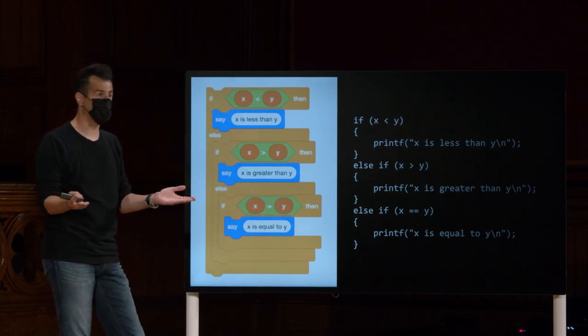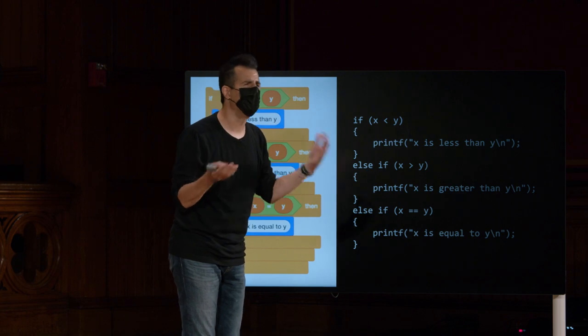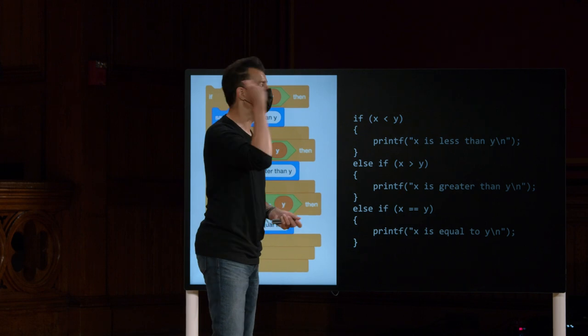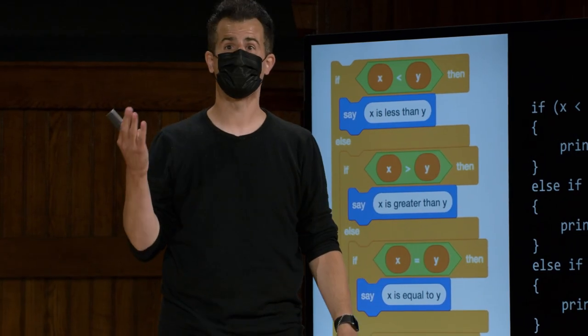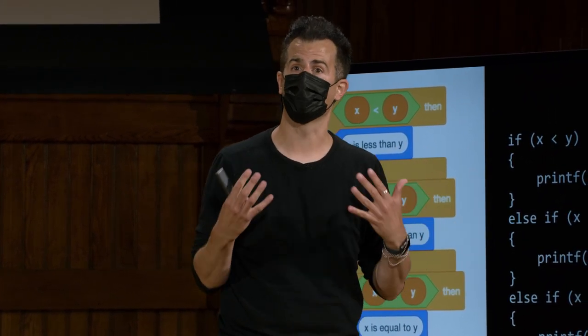Mas não precisamos do último if. Porque, pelo menos no mundo da comparação de inteiros, será menor, maior ou igual. Não há outro caso. Assim, se você pode economizar alguns segundos, se quiser, de seu programa em execução, um piscar de olhos, fazendo apenas duas perguntas e em seguida inferindo qual dele deve ser a resposta para a terceira apenas por natureza de sua própria lógica humana aqui.